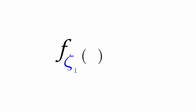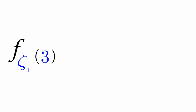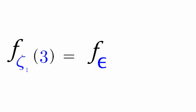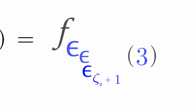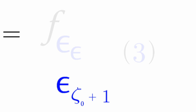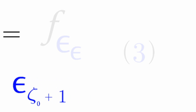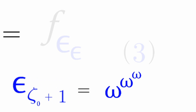Let's have f(ζ₁)(3). This is equal to f(ε_{ε_{ε_{ζ₀+1}}})(3). Let's focus on epsilon_{ζ₀+1} first. This breaks down into omega to the omega to the omega to the epsilon_{ζ₀+1}.